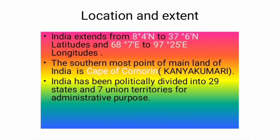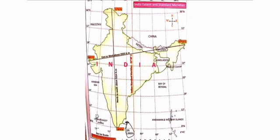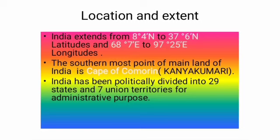The southernmost point of the mainland is called Cape Comorin. The north-south extent of India is 3,214 km, extending from Indira Col in Jammu and Kashmir in the north to Kanyakumari in the south. The east-west extension is 2,933 km, stretching from Rann of Kutch in the west to Arunachal Pradesh in the east. The Tropic of Cancer passes through the middle of the country, dividing it into two halves: the northern temperate and southern tropical lands. India has been politically divided into 29 states and 7 union territories for administrative convenience.